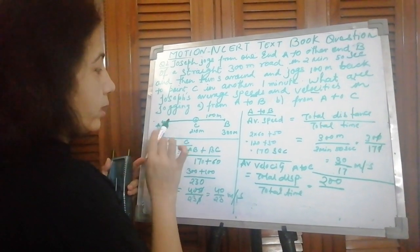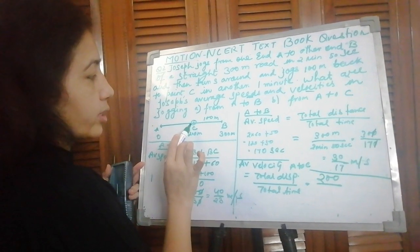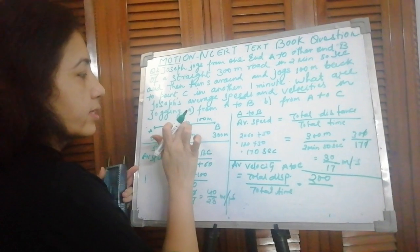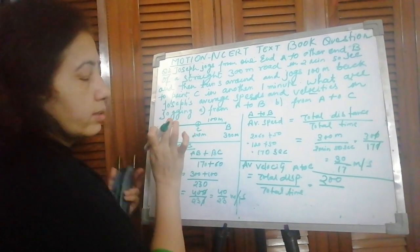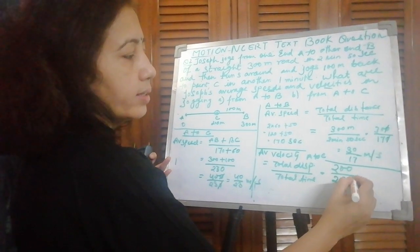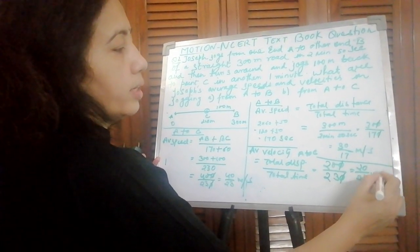Time, how much did he take? Total time: he went from here to here and came back. For displacement, how much time did he take? Again, went A to B and came back B to C. Total time is again 230. This is 20 upon 23 meter per second.